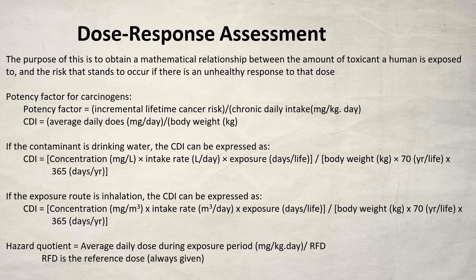The hazard quotient equals the average daily dose during the exposure period (mg/kg/day) divided by the reference dose (RFD). The reference dose will always be given in calculations in tutorials or exams. This leads to a dose response curve: on the x-axis is the concentration of the drug or chemical (on a log scale from 0.01 to 1000), and on the y-axis is the response as a percentage of the maximum. This represents either maximum effect or maximum death rate for a toxin.